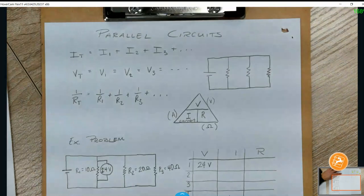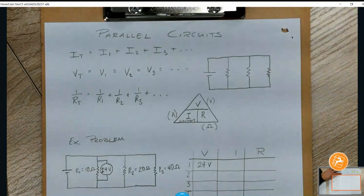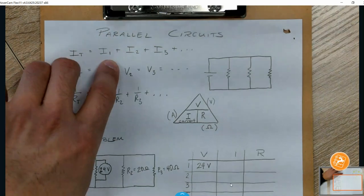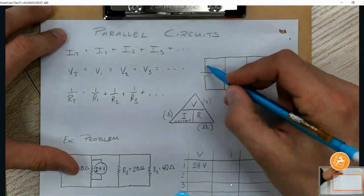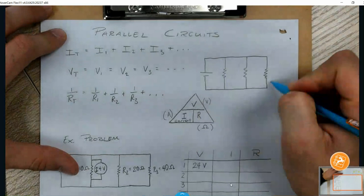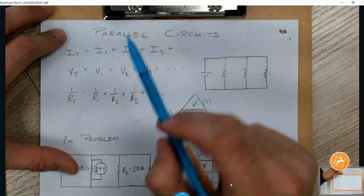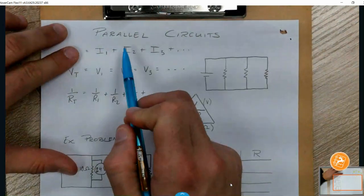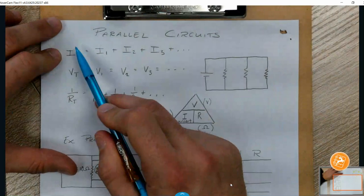So quick recap. Parallel circuits are rules here. Because the current has more than one pathway to take, they're not all going to be equal like they are in series. But if you add all the currents up, it's going to equal the total.